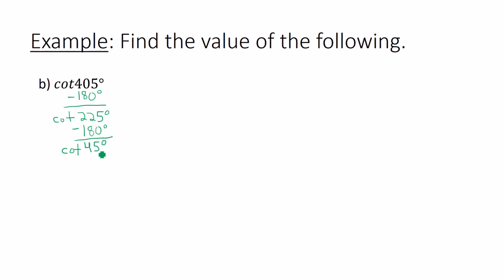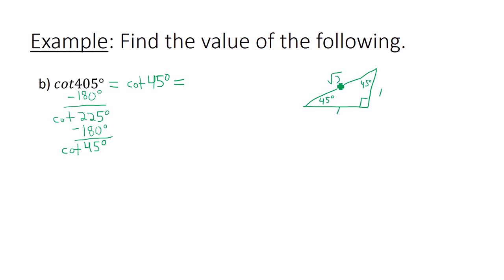Now I just need to evaluate cotangent of 45 degrees. Keep in mind that if you kept 225 degrees — a quadrant 3 angle — you would have found the reference angle by subtracting 180 degrees, giving you 45 degrees anyway. It doesn't matter if you're in quadrant 1 or quadrant 3; we get a positive answer either way. For the 45-45-90 triangle with sides 1, 1, √2: cotangent is adjacent over opposite, which is 1 over 1, so the answer is positive 1.